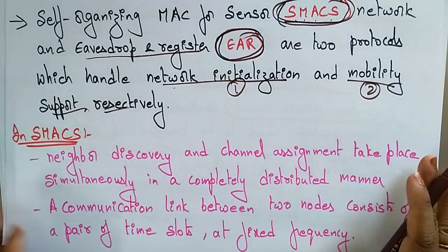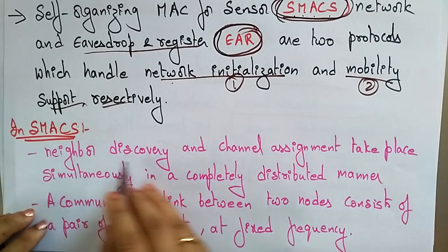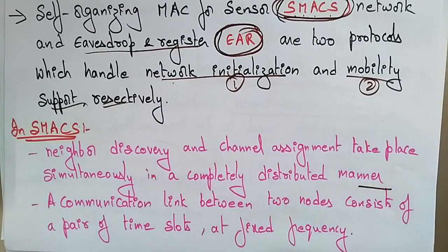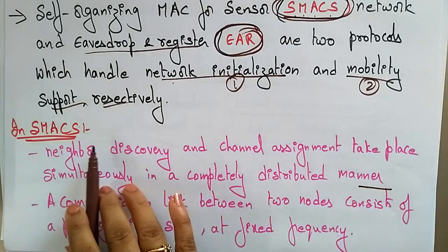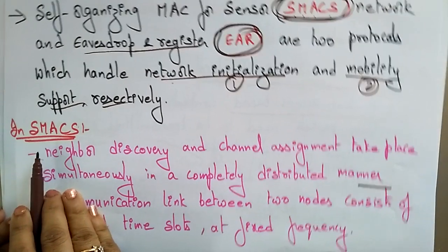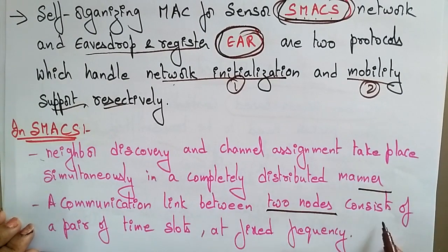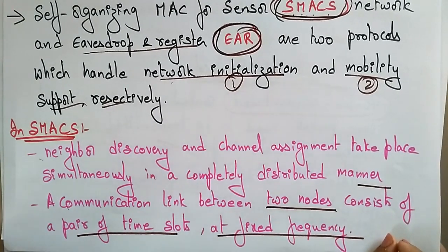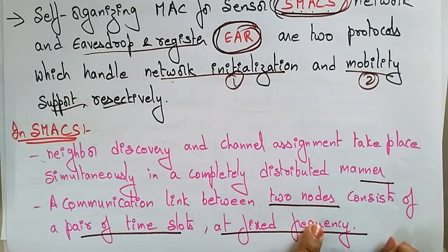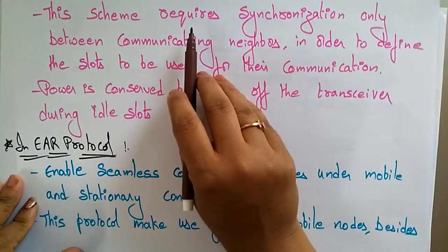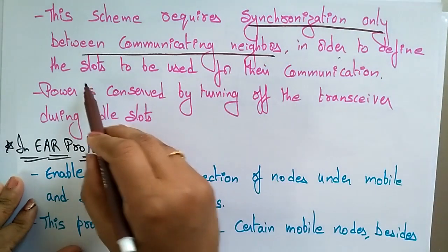In the SMACS protocol, neighbor discovery and channel assignment take place simultaneously in a completely distributed manner. A communication link is established between two nodes, consisting of a pair of time slots at a fixed frequency. This is an important point: in SMACS, a communication link consists of a pair of time slots at fixed frequencies.